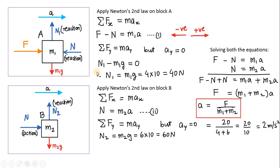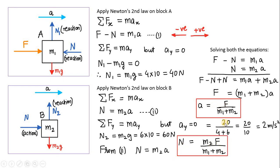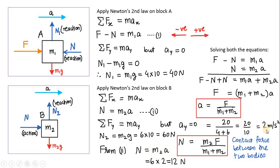It was also asked: what is the contact force between the two blocks? From equation 2, the normal reaction N equals M2 times A, which equals M2 times F divided by (M1 plus M2). Substituting numerical values: 6 kg times 2 m/s² = 12 Newtons. So the contact force between the two bodies is 12 N. In this manner we have solved this question.